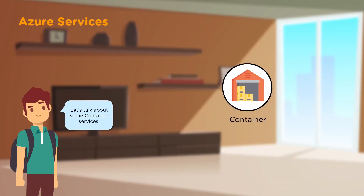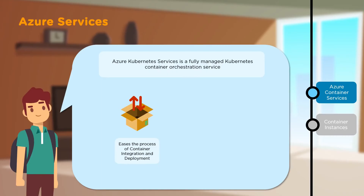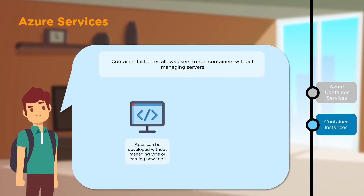Next, let's look at some Container Services. First, we have ACS or Azure Container Services, also known as Azure Kubernetes Services — a fully managed Kubernetes container orchestration service. This eases the process of container integration and deployment and can be used with security resources like virtual networks and cryptographic keys to keep your container secure. Next, we have Container Instances, which is similar to Functions — using containers without having to manage servers. Applications can be developed here without managing virtual machines or learning new tools; all that is Azure's responsibility. All you need to worry about is running the container.